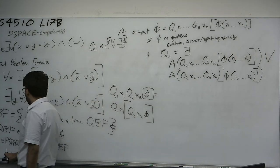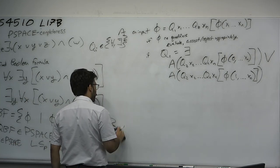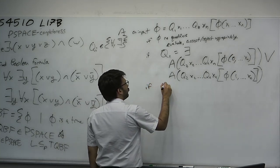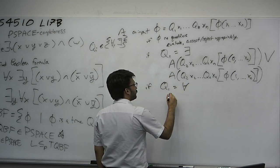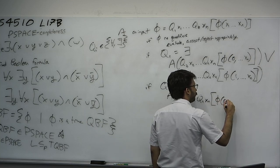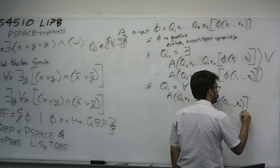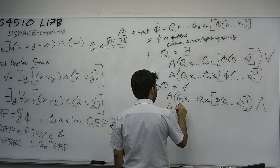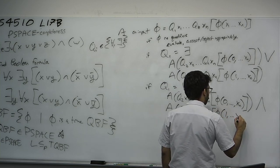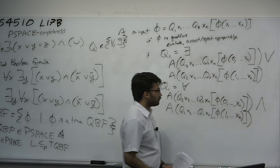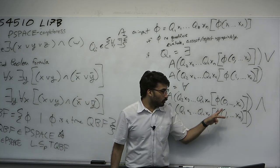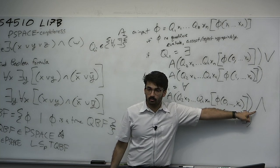If Q1 is a universal quantifier, we similarly make two recursive calls — A(Q2 X2 ... Qn Xn, phi[0,...,Xn]) and A(Q2 X2 ... Qn Xn, phi[1,...,Xn]) — but we require both calls to return true. At each step we remove one quantifier, so the recursion depth is N.